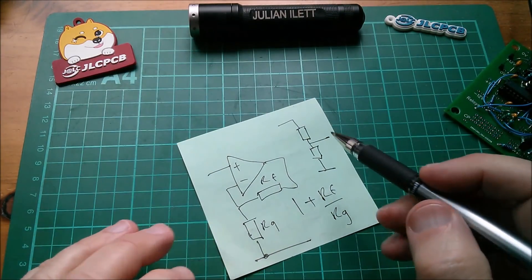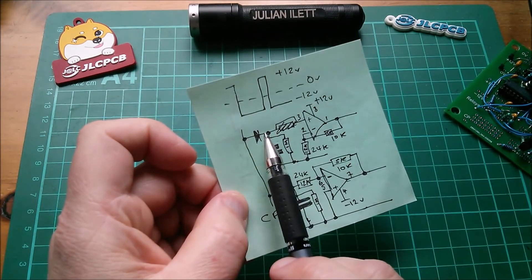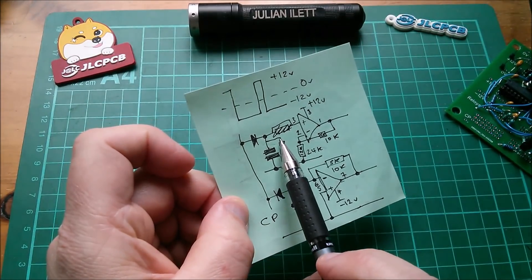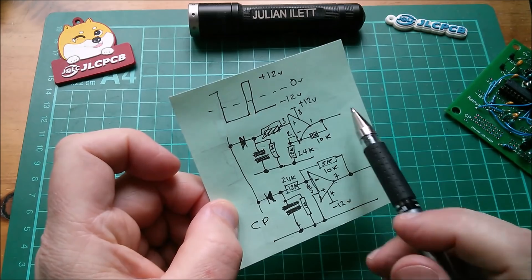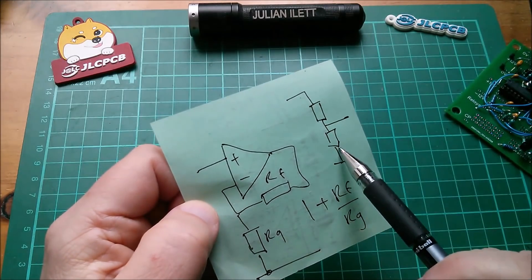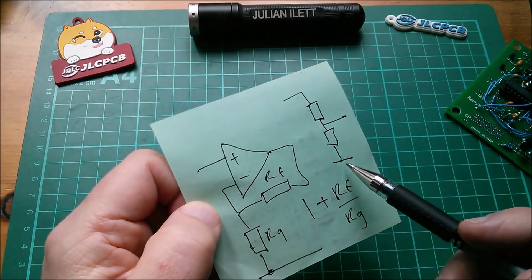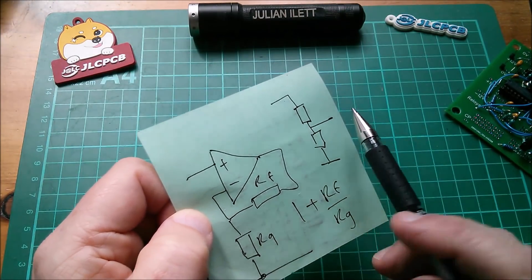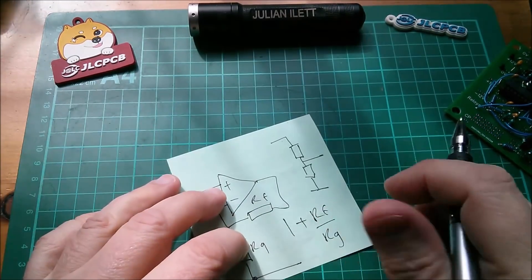Because of impedances. I need to present to this peak detector circuit approximately a one megaohm impedance, but on the other side of my potential divider, which is why this won't work, I need to present a relatively low impedance, no more than about 10k here to the next thing, which is an Arduino's analog to digital input.